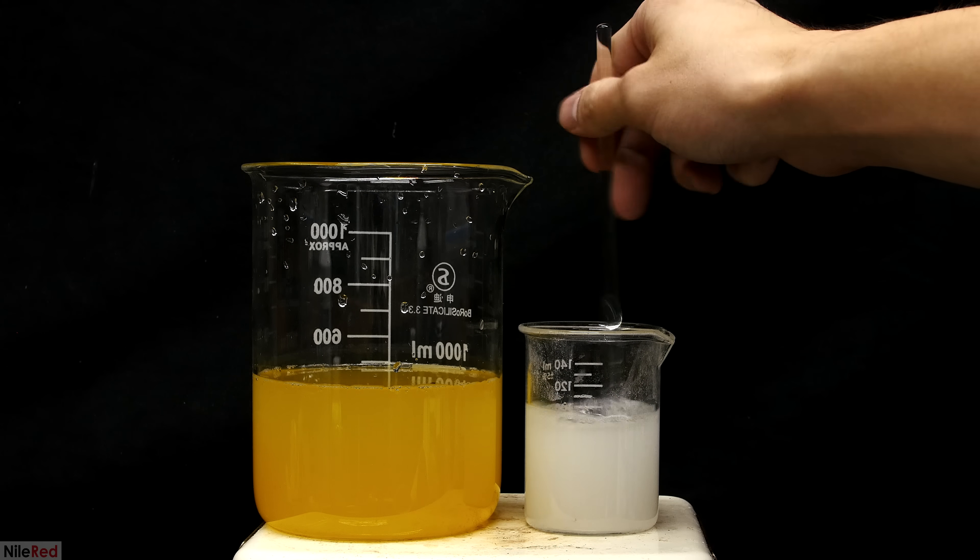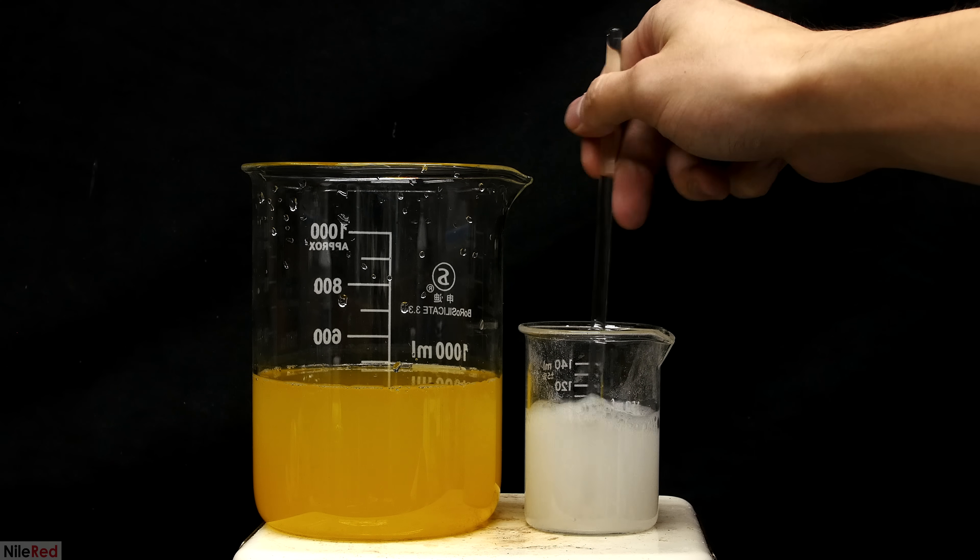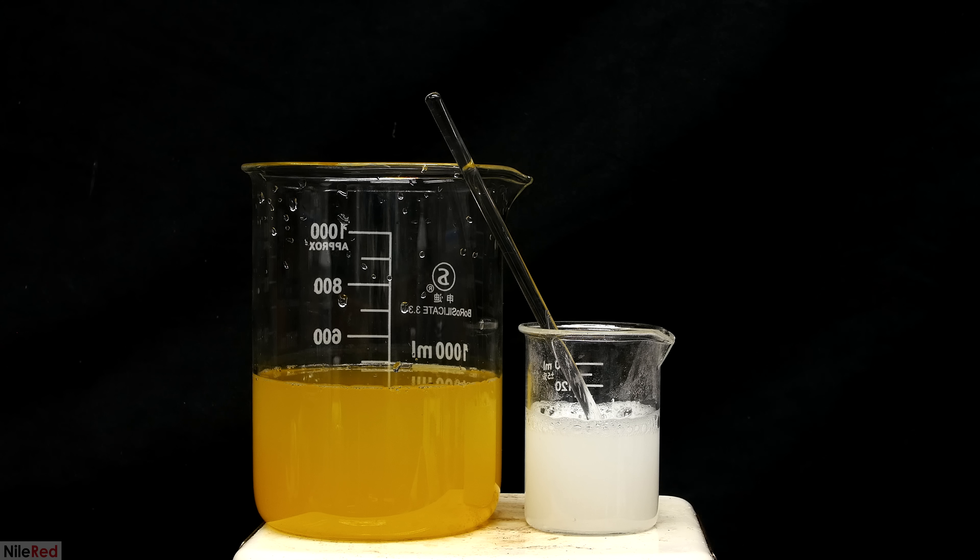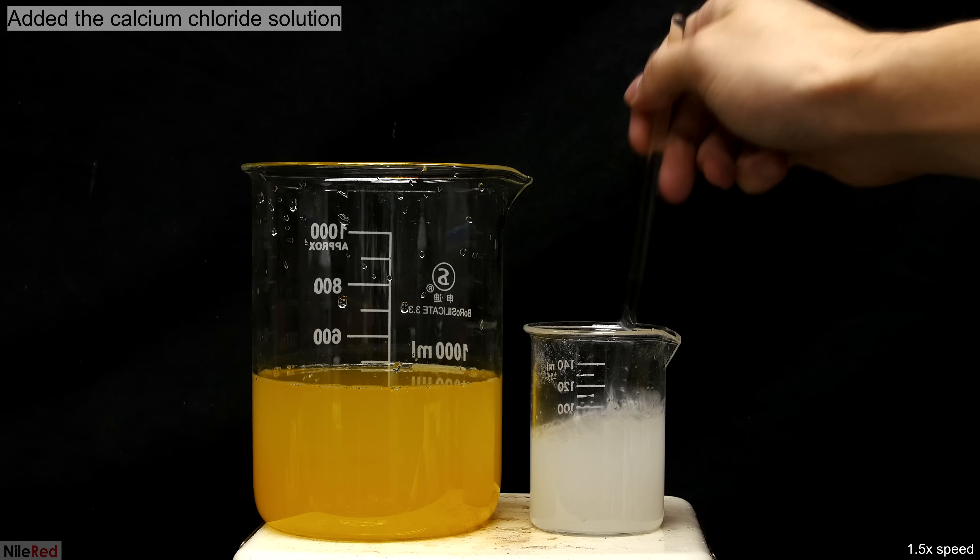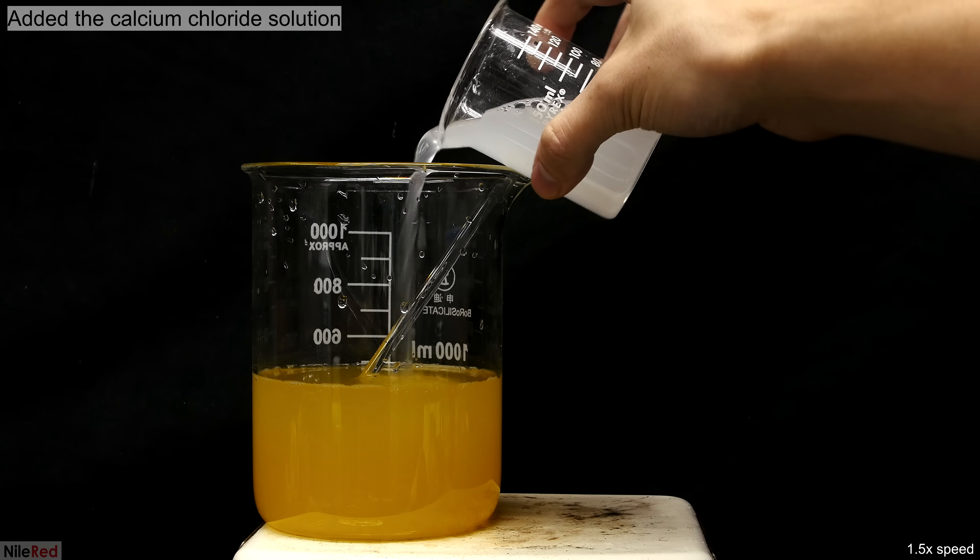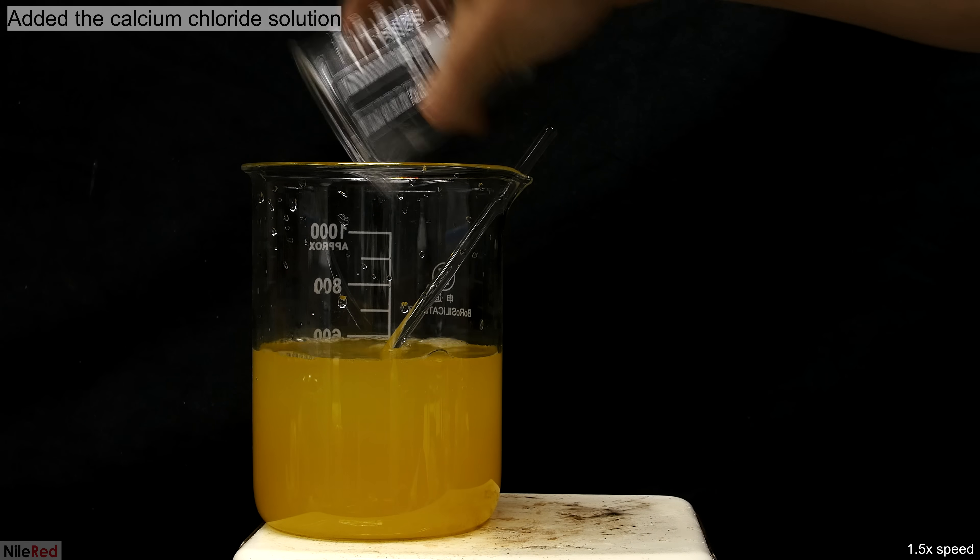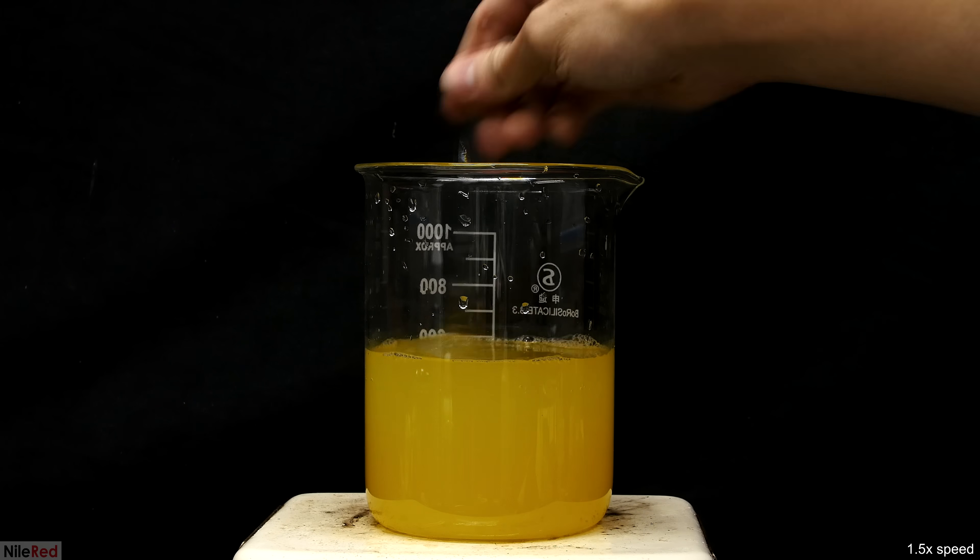The calcium chloride that I bought was meant for pools so it's not the highest grade. I tried filtering it but it didn't seem to make too much of a difference. In the end though I don't think this is a big problem and it shouldn't really contaminate the final product. It was all added to the sodium citrate solution and then using the glass stir rod I mixed it thoroughly.